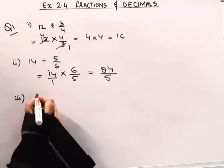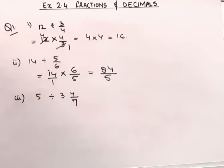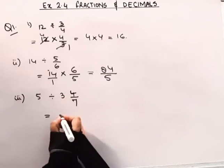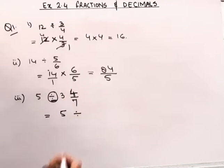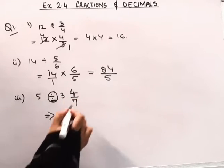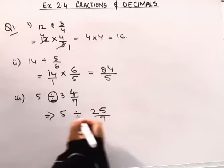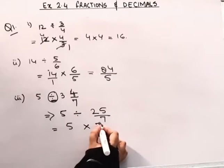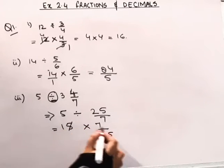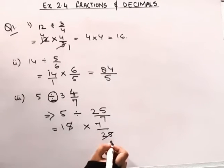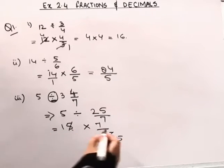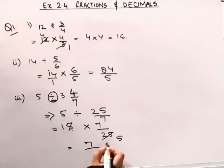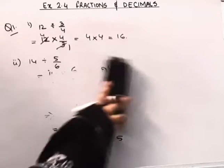Now the third part is 5 divided by 3 and 4 by 7. This is a mixed fraction. 3 sevens are 21, plus 4 is 25, divided by 7. The answer to the third part is 7 by 5. 5 ones are 5; 25 and 25 cancel.